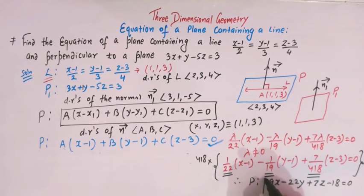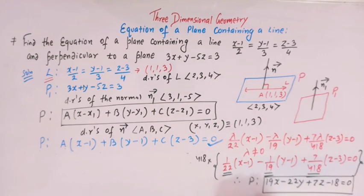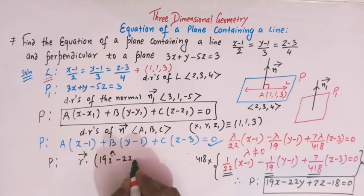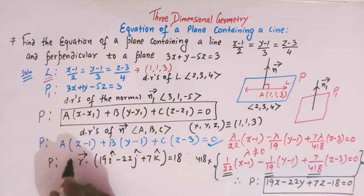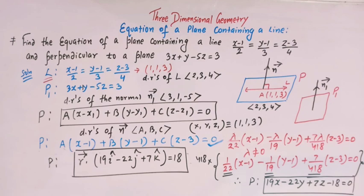The Cartesian equation of plane P is 19x minus 22y plus 7z minus 18 equal to 0. This can also be expressed in vector form as r-vector dot (19 i-cap minus 22 j-cap plus 7 k-cap) equal to 18. This is how we solve this important problem from three-dimensional geometry.